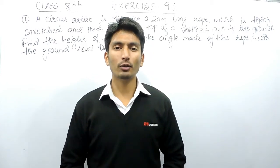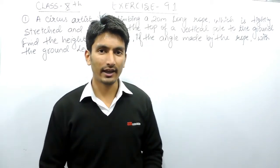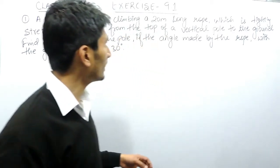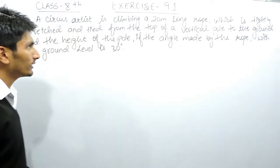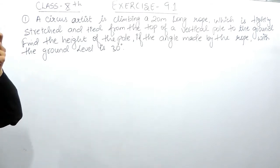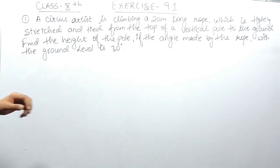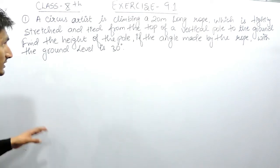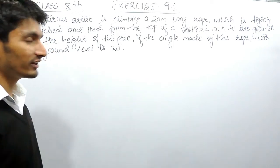Hello everyone, we are from True Maths and in this video we are going to start Exercise 9.1. Here is the first question: a circus artist is climbing a 20-meter long rope which is tightly stretched and tied from the top of a vertical pole to the ground. We have to find the height of the pole if the angle made by the rope with the ground level is 30 degrees. This is an application of trigonometry.